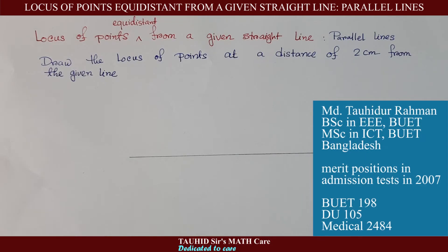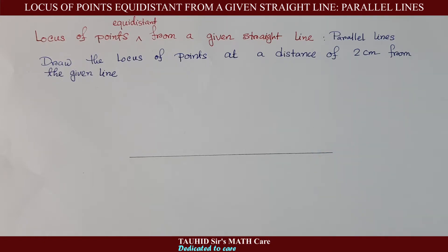Now we will learn how to draw the locus of points equidistant from a given straight line. That means we are given a straight line and we need to find the locus of those points which maintain a fixed distance from this line. For example, here you are given a question: draw the locus of points at a distance of 2 centimeters from the given line.